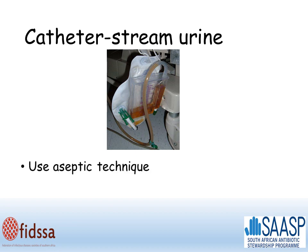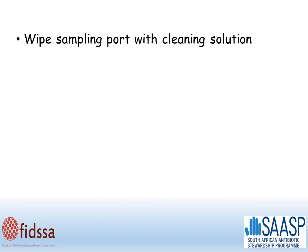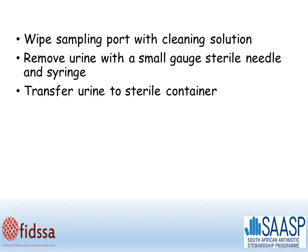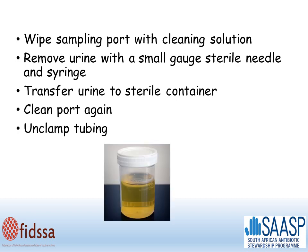To collect a catheter stream urine, you must use aseptic technique using sterile gloves. First, clamp the tubing just distal to the sampling port. Wipe the sampling port with appropriate cleaning solution. Remove urine with a small gauge sterile needle and syringe, and transfer this to a sterile container. Clean the port again, and unclamp the tubing.